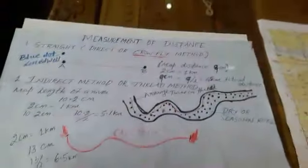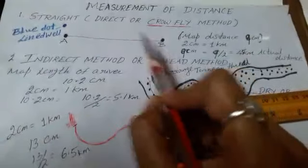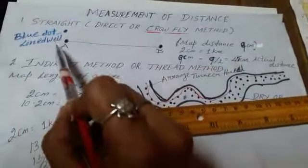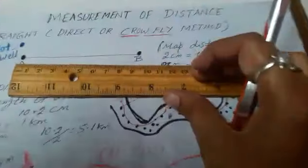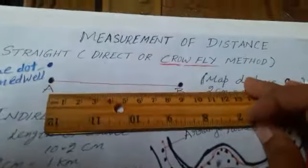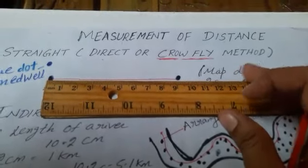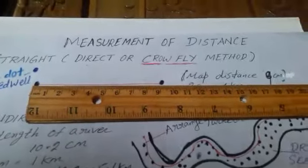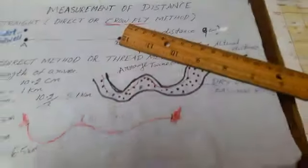For the direct method: suppose there are two perennial wells, A and B, shown as blue dots. The question is to find the actual distance from A to B. We measure A to B on the map — it comes to 9 cm. Given scale: 2 cm = 1 km. So 9 cm = 9 ÷ 2 = 4.5 kilometers.